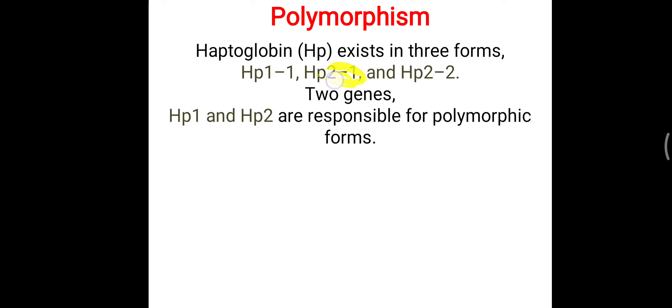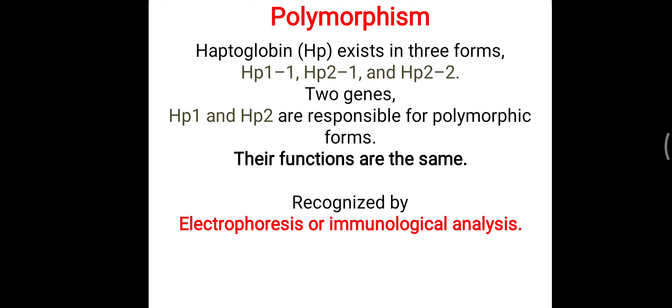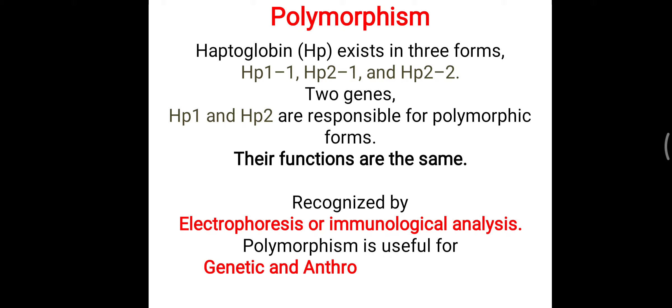In person A, haptoglobin 1-1 is present; in person B, haptoglobin 2-1; and in person C, haptoglobin 2-2. The basic function of haptoglobin — to attach with hemoglobin and prevent its loss in urine — remains the same. But in different populations they are found in different phenotypical presentations, which can be identified by electrophoresis and immunological analysis.